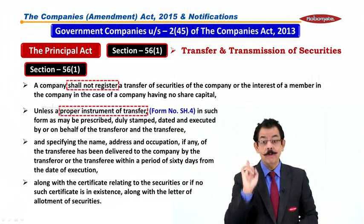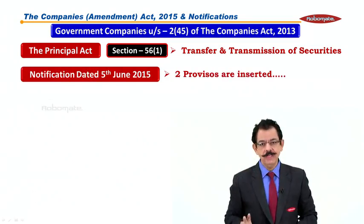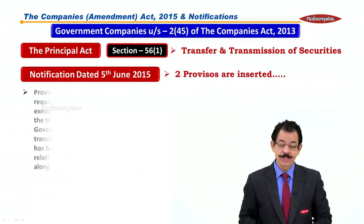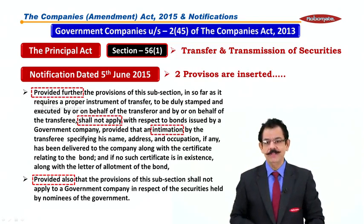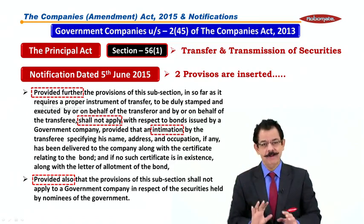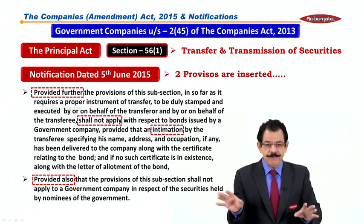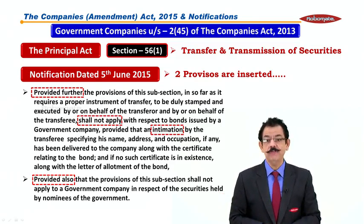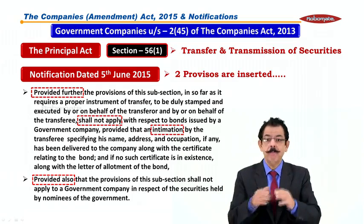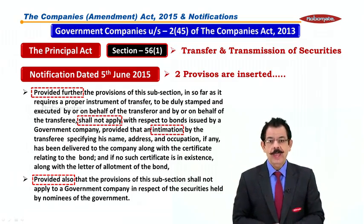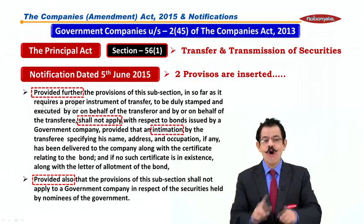The notification dated 5th June inserts two provisos into this section. The first proviso and the second proviso — the circled one is very important. Proviso 2 states: 'Provided further, the provisions of this sub-section, in so far as it requires the proper instrument of transfer to be duly stamped and executed by or on behalf of a transferor and by or on behalf of a transferee, shall not apply...'